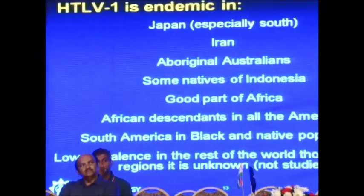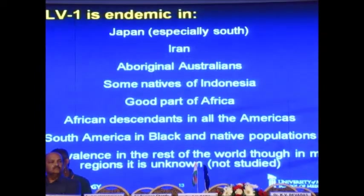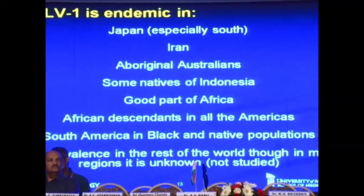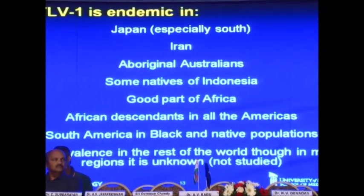HTLV-1 and 2 cause diseases — HTLV-1 much more. They cause adult T-cell leukemia and also a fatal paralytic disease, formally referred to as tropical spastic paraparesis. They can also cause modest immune deficiency and immune dysregulation, sometimes leading to autoimmune disease. HTLVs are an ancient infection of man coming from African and Asian monkey viruses known as simian T-cell leukemia viruses. HTLV is endemic in Japan (especially the south), in Iran, in aboriginal Australians, in some natives of Indonesia, in good parts of equatorial Africa, and in African descendants throughout the Americas — especially Brazil, Colombia, Venezuela, and Peru. I don't think we know a great deal about the prevalence of HTLV in India.